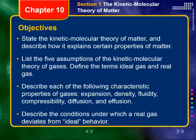List the five assumptions of the kinetic molecular theory of gases, and then define the terms ideal gas and real gas. Describe each of the following characteristic properties of gases: expansion, density, fluidity, compressibility, diffusion, and effusion. And then describe the conditions under which a real gas deviates from ideal behavior.